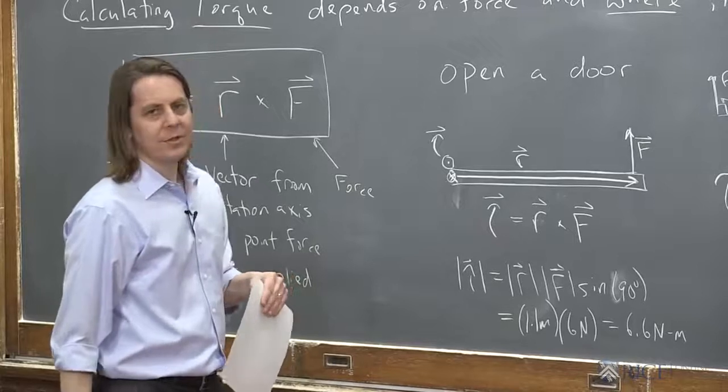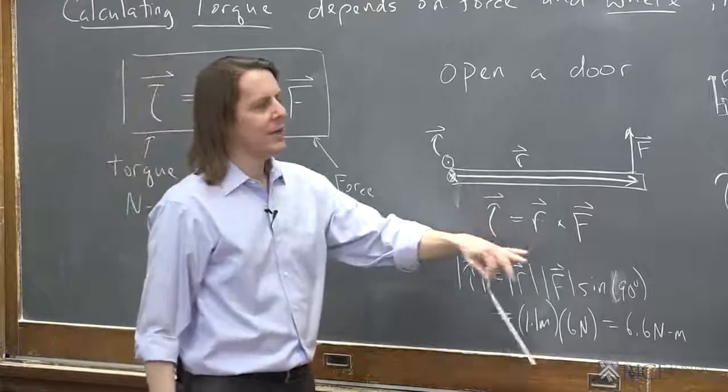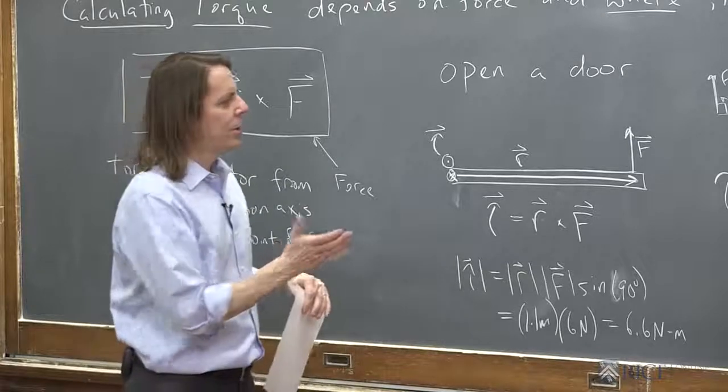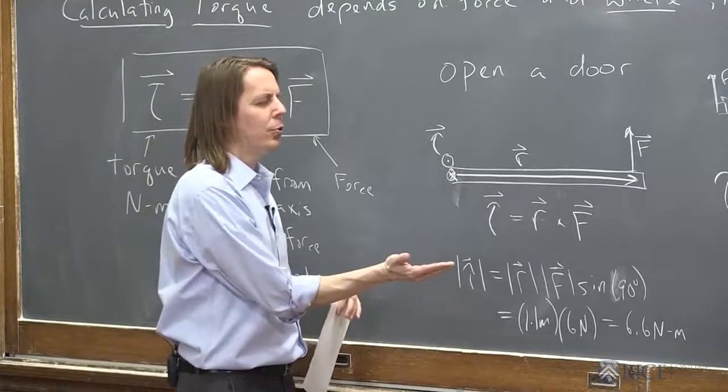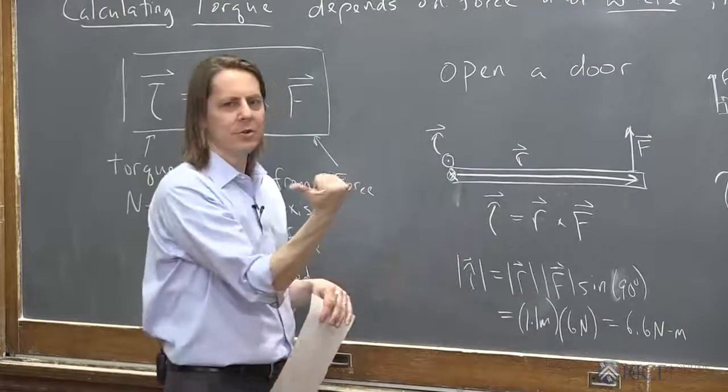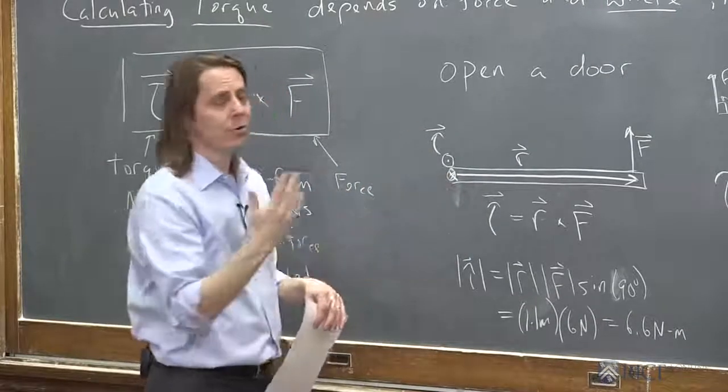Another way you can get the direction of a torque vector, if you don't want to do the cross product, is it has its own right-hand rule. You make your fingers curl along the direction the torque would like to produce force, and your thumb will be the direction of the torque vector, so its own personal right-hand rule.